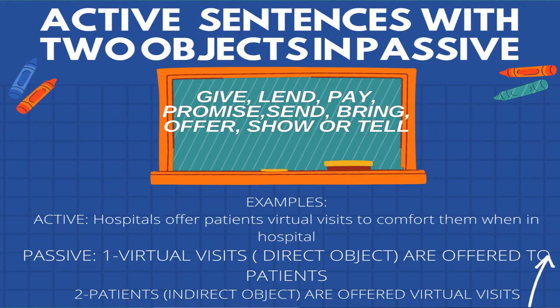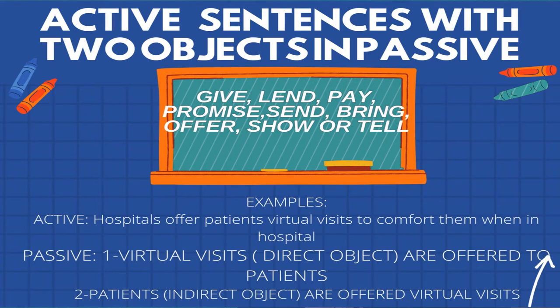Talking about objects, we should mention something especially used in English that does not happen in Spanish at all. Some active sentences can have a direct and an indirect object. These often use verbs like give, lend, pay, promise, send, bring, offer, show, or tell. When we make these sentences passive, either of the two objects can become the subject. The only difference is that when the indirect object comes after the passive verb, we add either 'to' or 'for.' This use is far more common, so we as Spaniards need to make an effort to use this structure. For instance: 'Hospitals offer patients virtual visits to comfort them when in hospital.' You can say 'virtual visits are offered to patients' or 'patients are offered virtual visits to comfort them.'